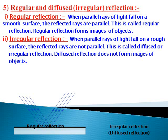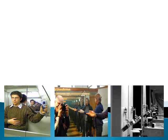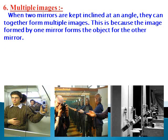Whenever you visit a barbershop or use a change room of a garment store, you find a lot of images of yourself because more than one mirrors are placed there. Let us understand this concept of multiple images. When two mirrors are kept inclined at an angle, they can together form multiple images. This is because the image formed by one mirror forms the object for the other mirror.